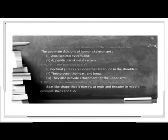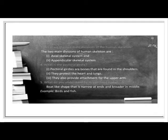What are the two main divisions of the human skeleton? The two main divisions of human skeleton are axial skeletal system and appendicular skeletal system.